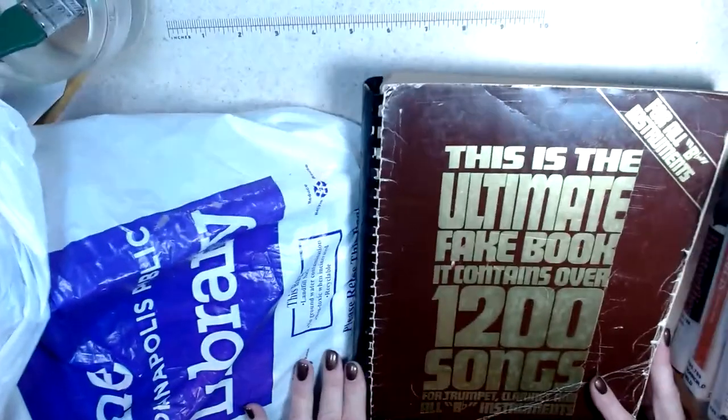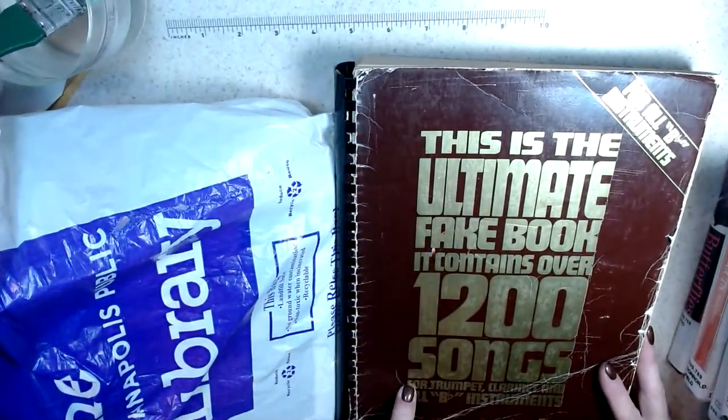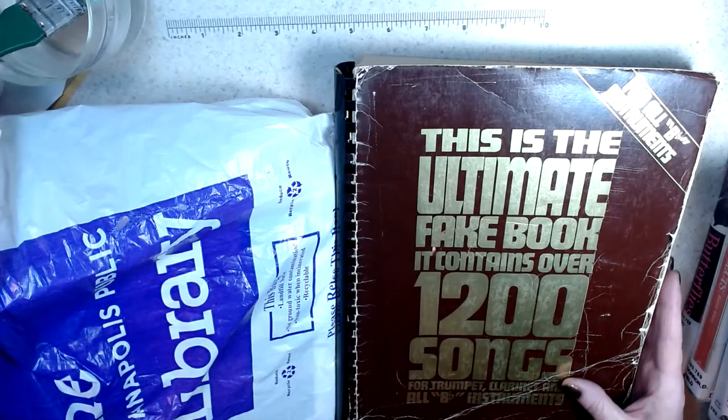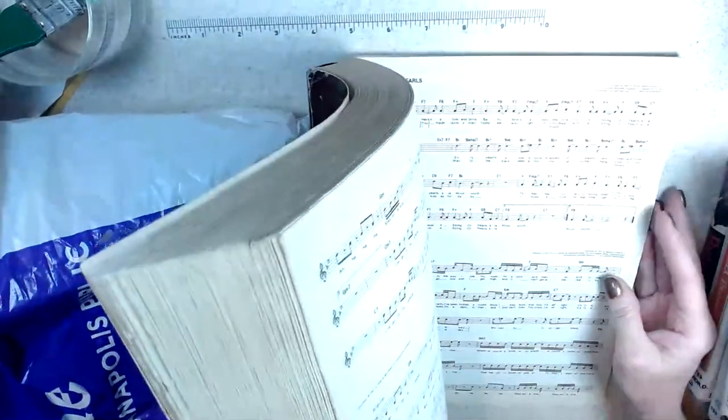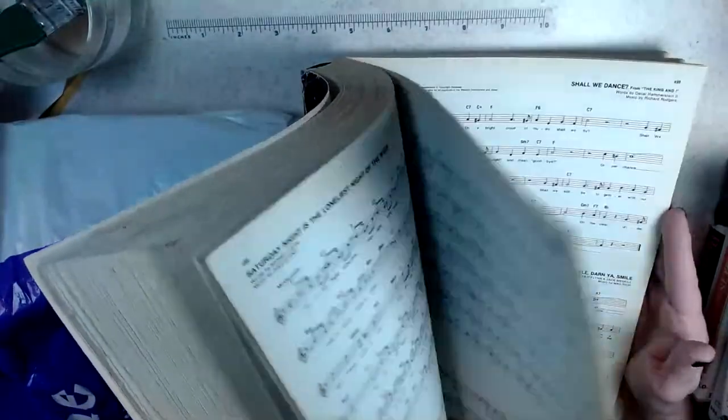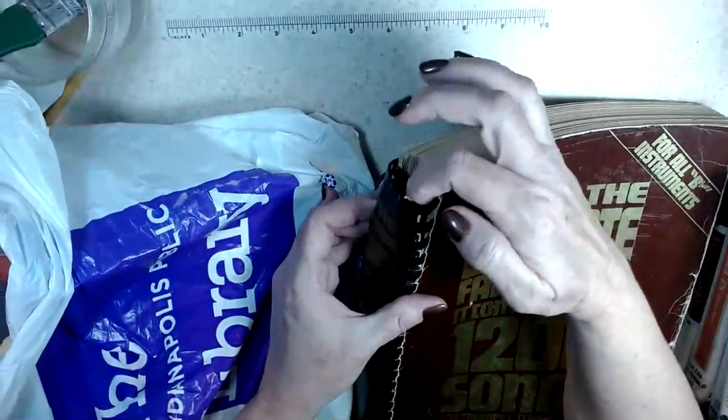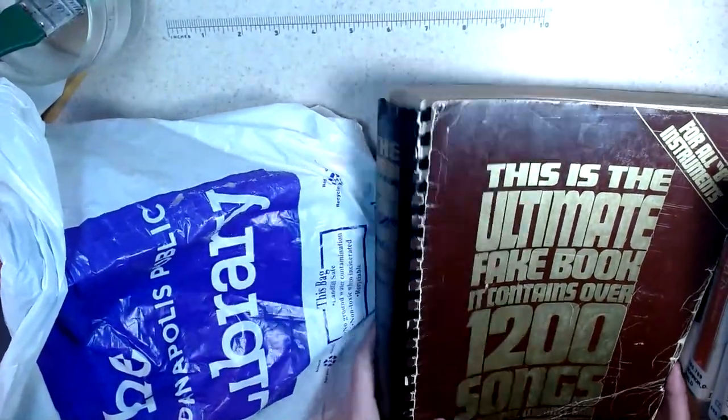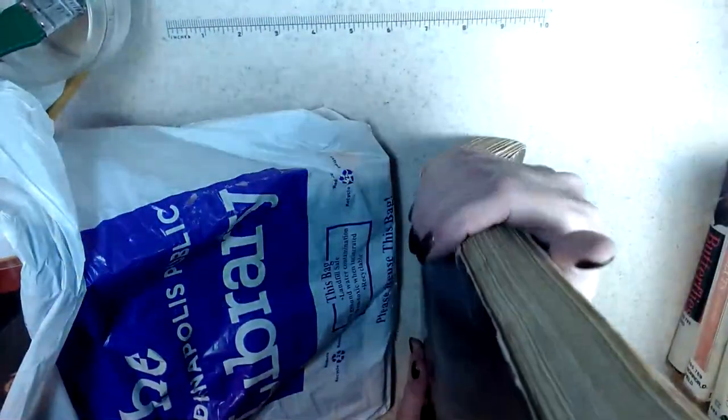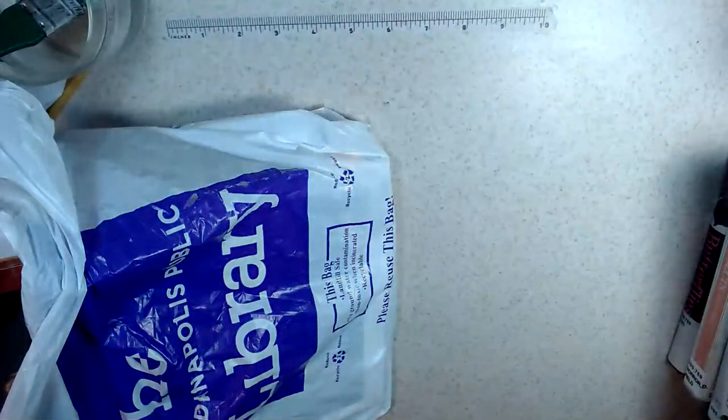I found this—it's called The Ultimate Fake Book. It contains over 1200 songs for trumpet, clarinet, and all B-flat instruments. I love that these pages are already yellowed on the side. I'll be able to take this spine off and take these pages out with no problem. Look how thick this thing is, like an old-fashioned phone book.